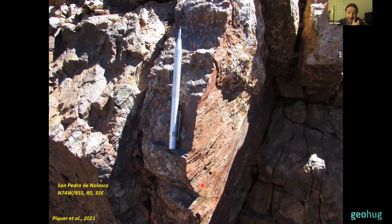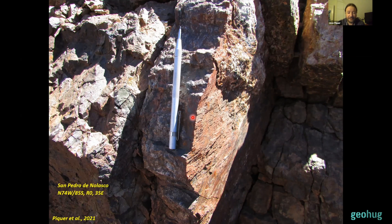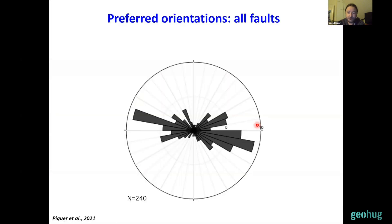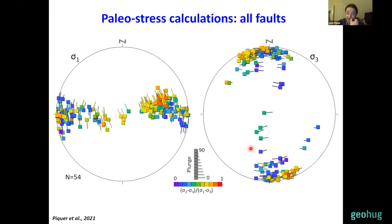This fault also controls the emplacement of beautiful systems of epithermal intermediate sulfidation veins — very rich in copper, silver, and lead — which are very important in terms of historical mining activity in this area. They were syntectonically emplaced along branches of the Yucaure system, showing evidence of syntectonic emplacement during sinistral reactivations of these faults. The preferred orientation of fault planes in the area clearly shows this west-northwest trend parallel to the inferred orientation of the basement fault at depth. The paleostress calculation is consistent with a strike-slip regime with more or less east-west trending sigma one and north-south to north-northwest trending sigma three.